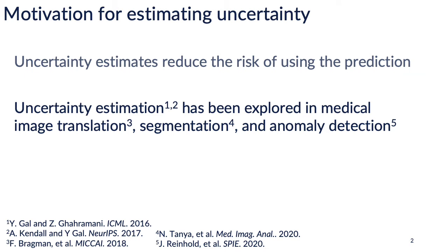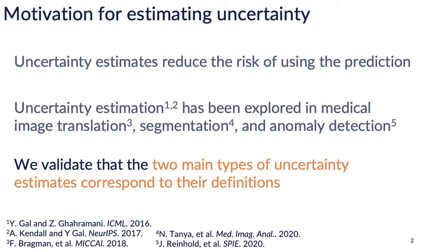The uncertainty estimation technique we'll be using is from Yarin Gal and his collaborators, who showed that using dropout during training fits a distribution over the weights of a neural network, and then using dropout during testing samples from this fit distribution. Gal claimed that the uncertainty from this dropout procedure corresponds to epistemic uncertainty. He also introduced a way to calculate aleatoric uncertainty. These two types have been used in image translation, segmentation, and our own work for anomaly detection published at SPIE. In this work, we take a step back and validate that the uncertainty estimates correspond with their definitions.